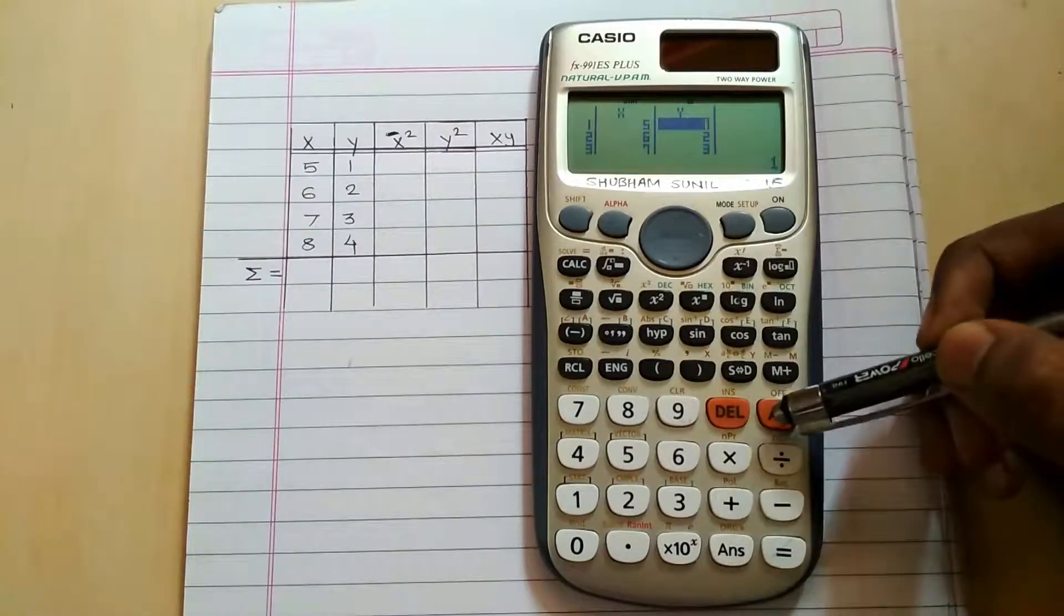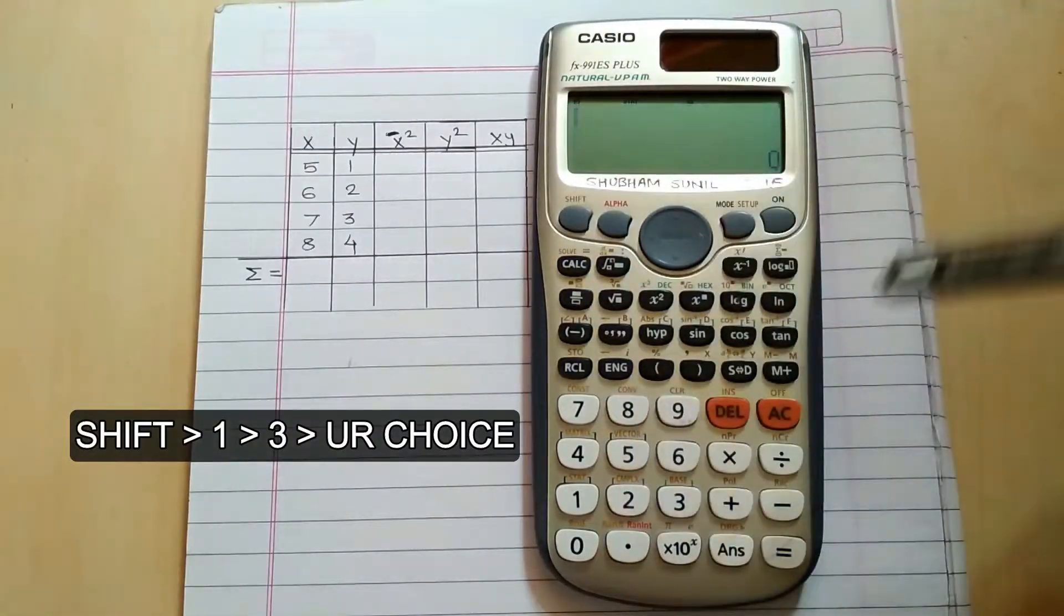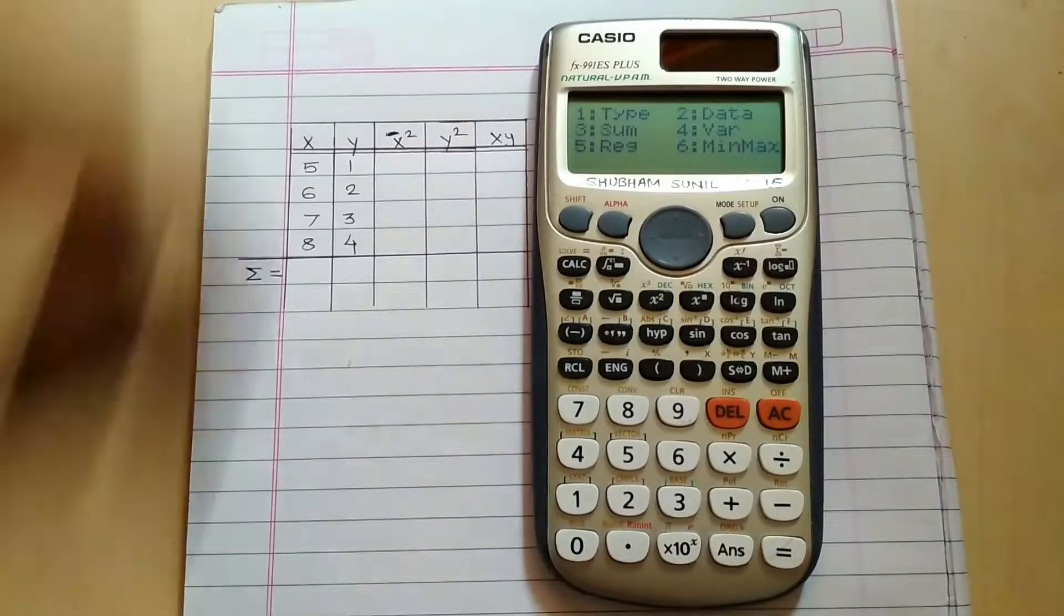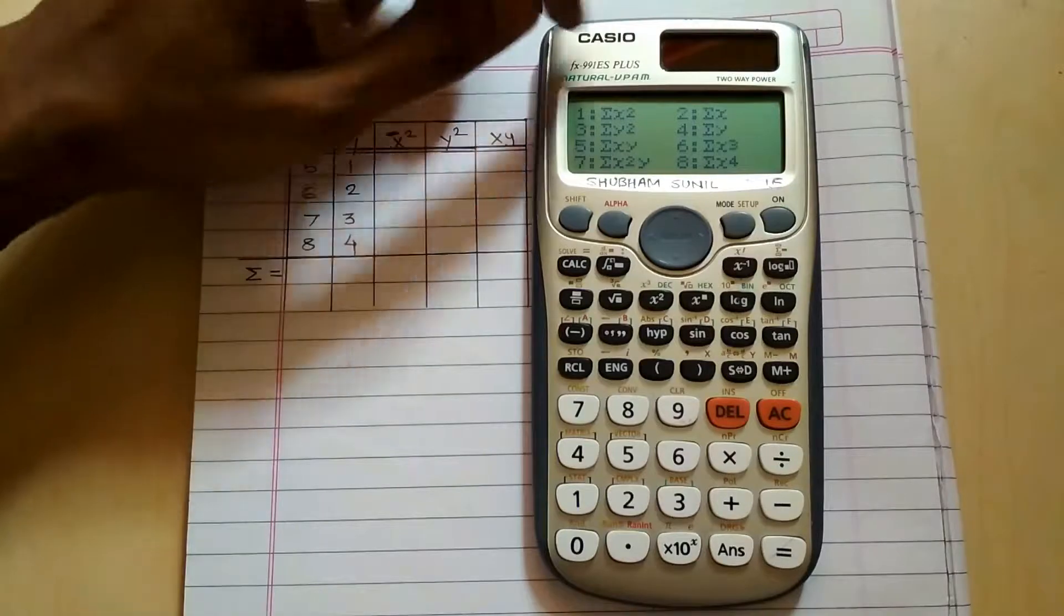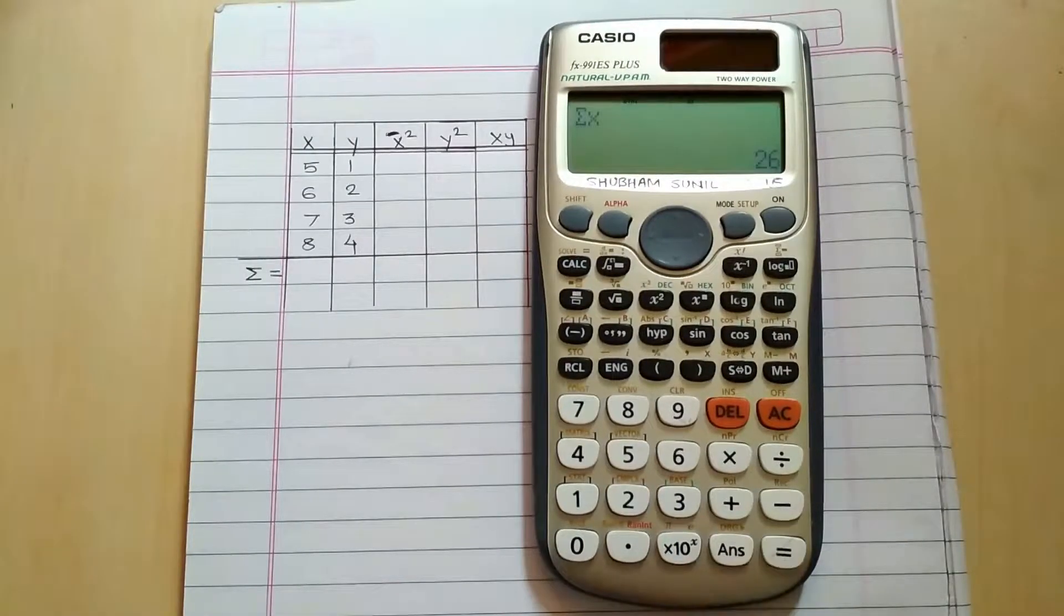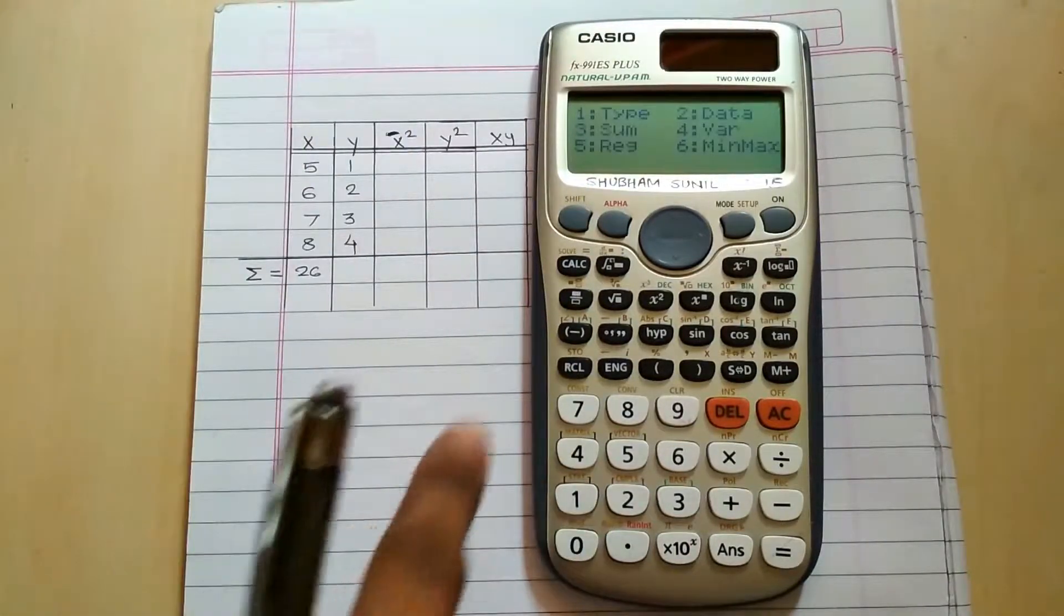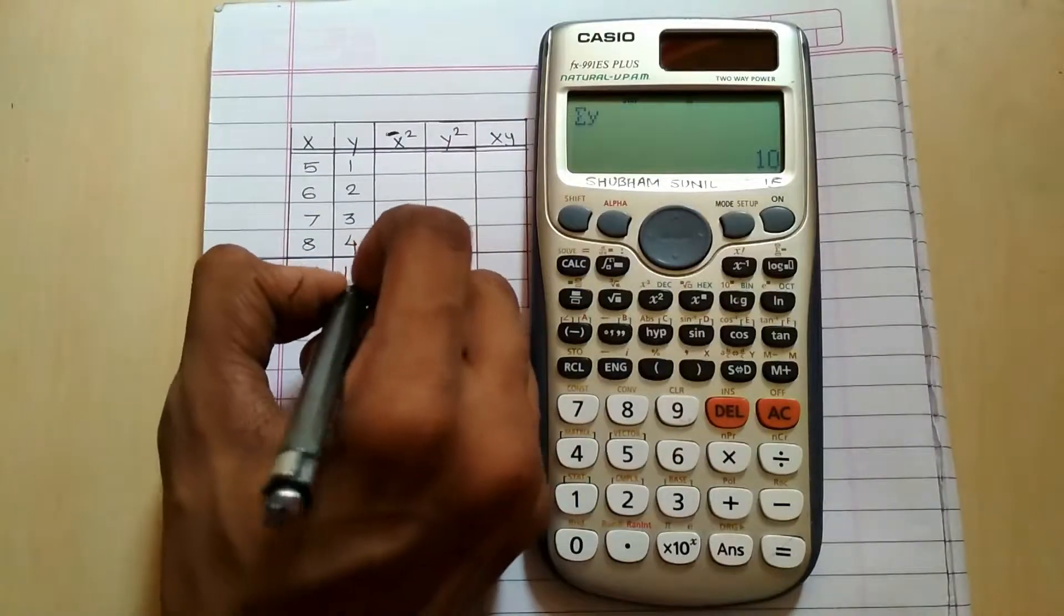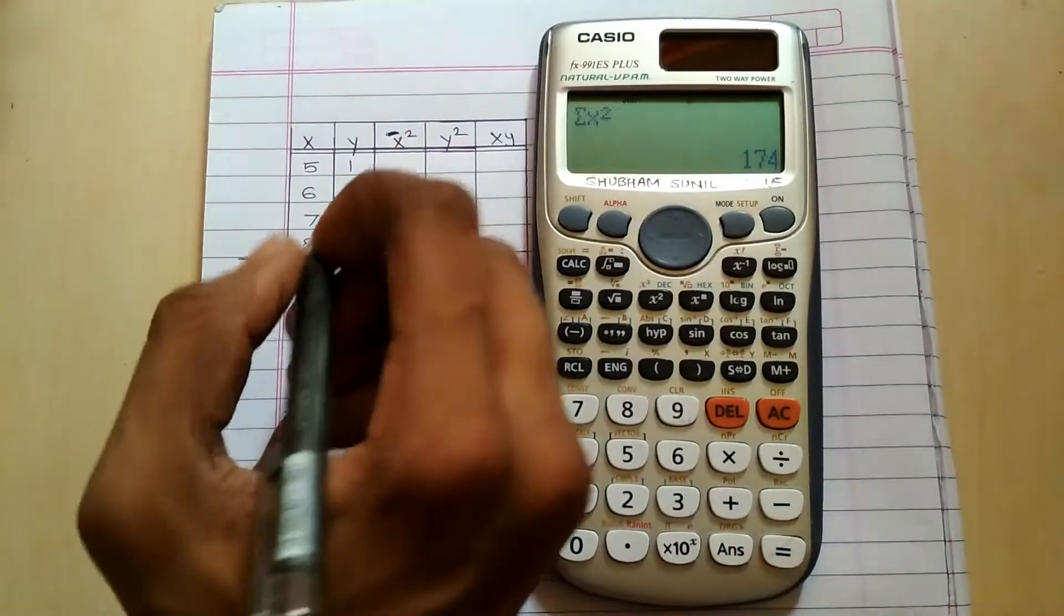Now press the table, enter the table, just press AC button and then go to shift and stat, that is 1, shift and 1, and then go to 3, that is sum. Here it is asking what you want, summation of x, summation of y, or summation of x square y square. I want summation of x, just press that and press equal to, I got the answer 26 directly. Press shift 1 sum and summation of y, that is 4, and press equal to. Again shift 1 3, summation of x square, that is 1, equal to 174.